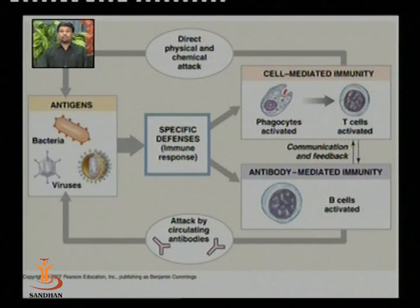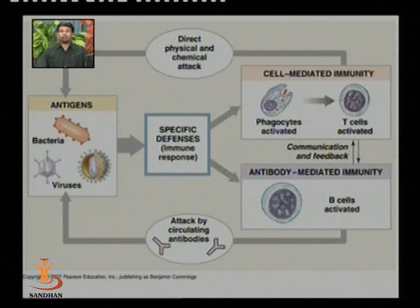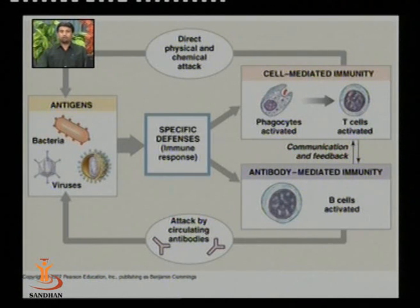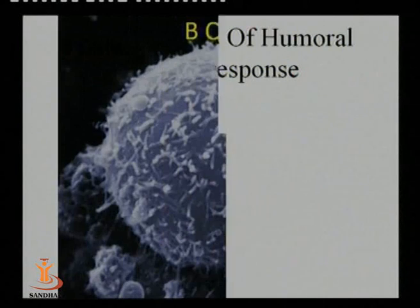Whenever a foreign particle acting as an antigen enters the body, specific defense mechanisms give two types of immunity: first, cell-mediated immunity; second, antibody-mediated immunity, also known as humoral immunity. Cell-mediated immunity physically attacks the antigen through chemical secretions, while humoral immunity attacks through antibodies. Various elements involved in humoral immune response include B cells, antigen-presenting cells, T helper cells, plasma cells, and antibodies.